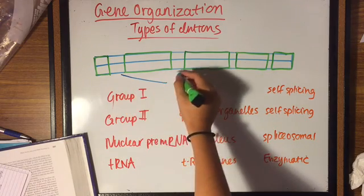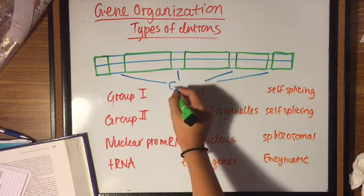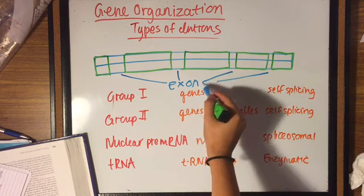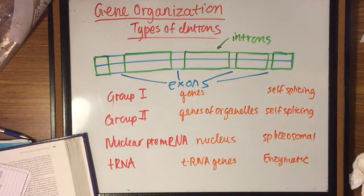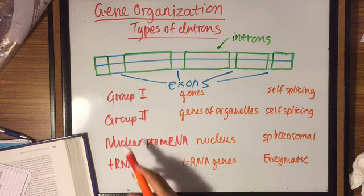Many eukaryotic genes contain exons and introns. Both are transcribed into RNA, but introns are later removed by RNA processing. The number and size of introns vary from gene to gene. They are common in many eukaryotic genes, but uncommon in bacterial genes.